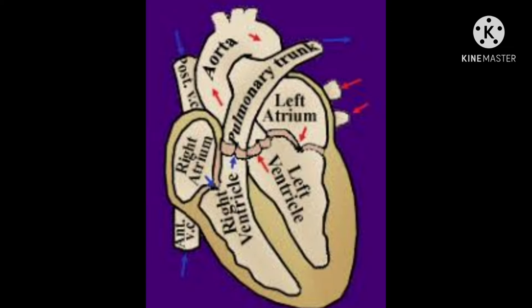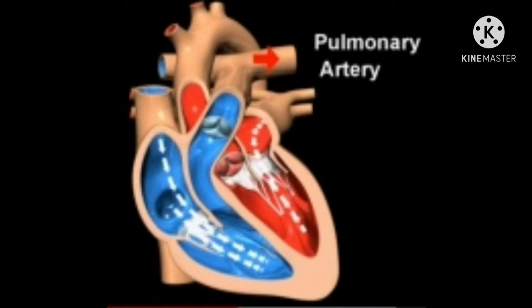The top of the right atrium is connected to the main vein, that is the vena cava, which brings deoxygenated blood into the right atrium from all the body organs. The lower side of the right atrium is connected to the right ventricle. Deoxygenated blood from the right atrium goes into the right ventricle.